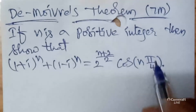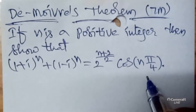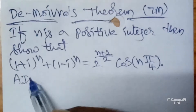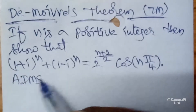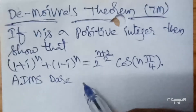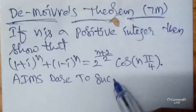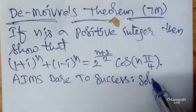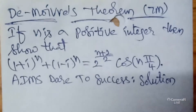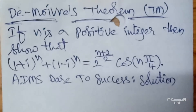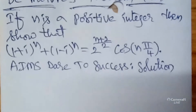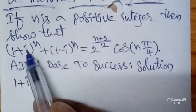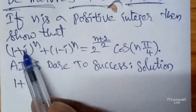I wanted to explain the aims dare to success solution. So before going to that, I wanted to consider one place i, first inside of the bracket.